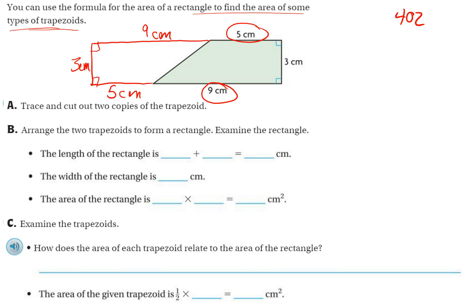Examine the rectangle. The length of the rectangle is 5 plus 9, right? From here to here is 5, and then from here to here is 9. Same thing on top. From here to here is 5, and from here to here is 9, which is 14. The width is the same, 3.